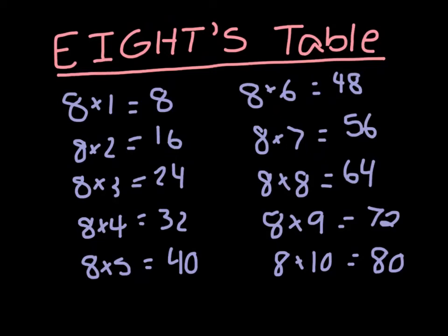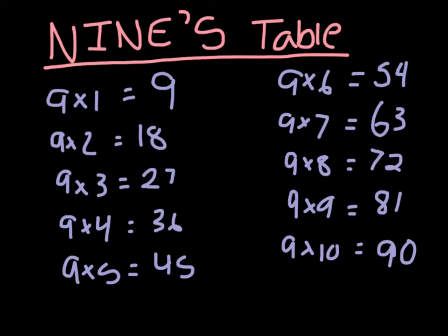Now let's go on to our nines table. It goes: 9 times 1 is equal to 9, 9 times 2 is equal to 18, 9 times 3 is equal to 27, 9 times 4 is equal to 36, 9 times 5 is equal to 45, 9 times 6 is equal to 54, 9 times 7 is equal to 63, 9 times 8 is equal to 72, 9 times 9 is equal to 81, and 9 times 10 is equal to 90.